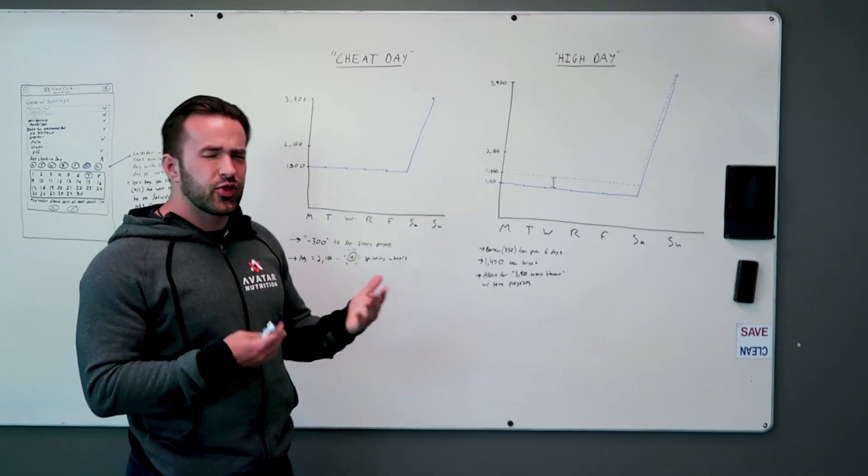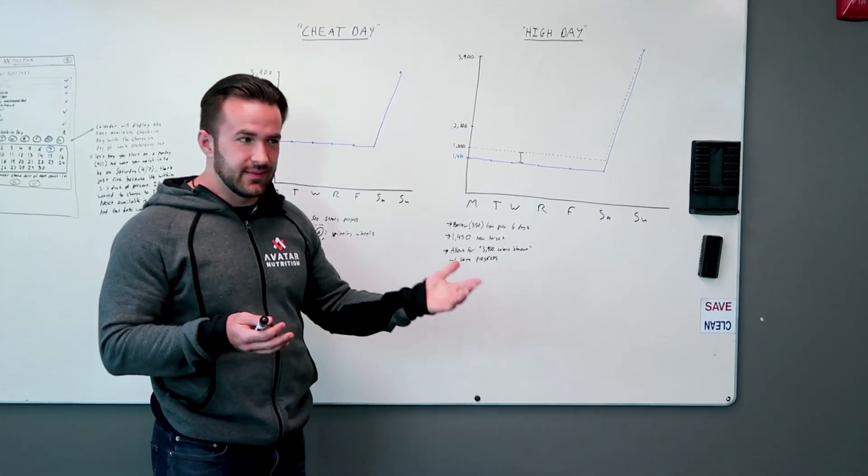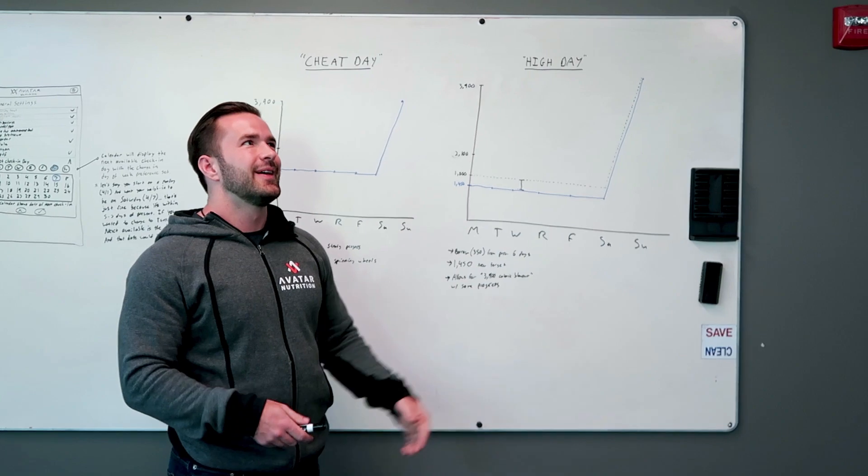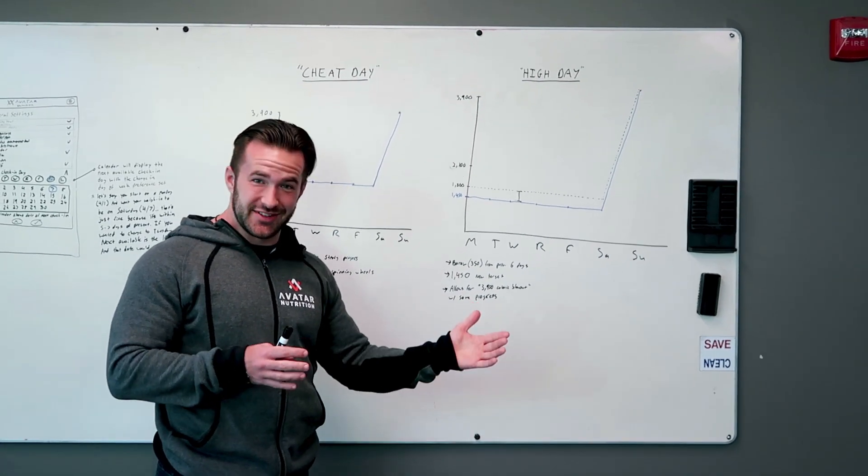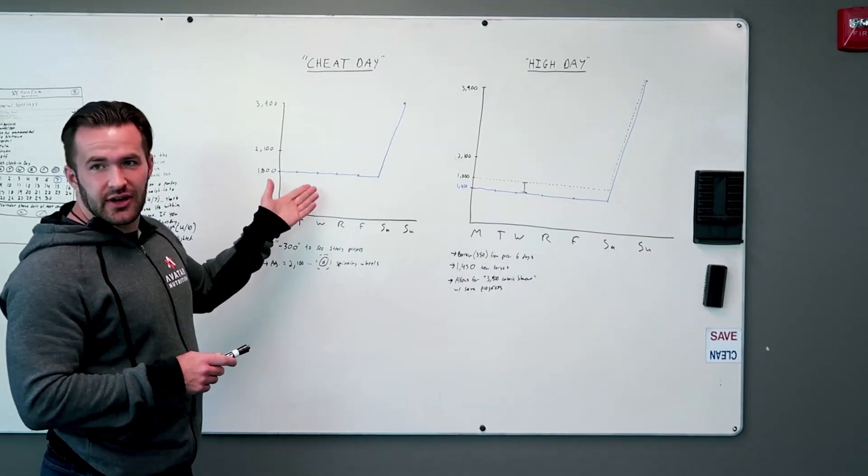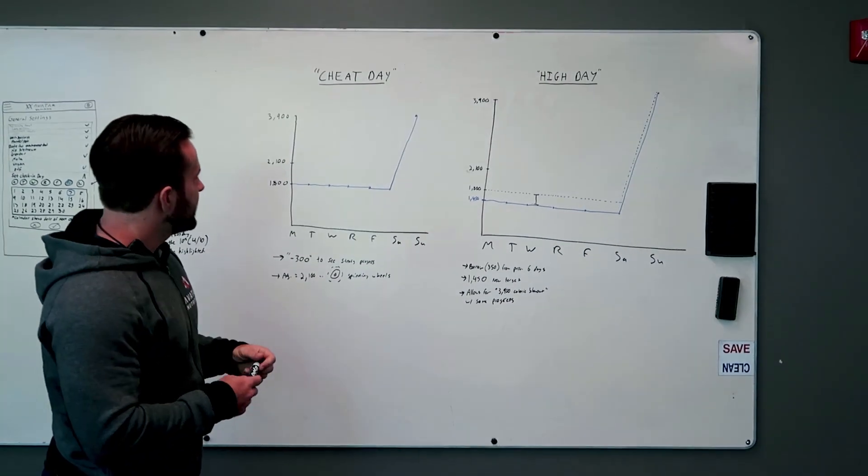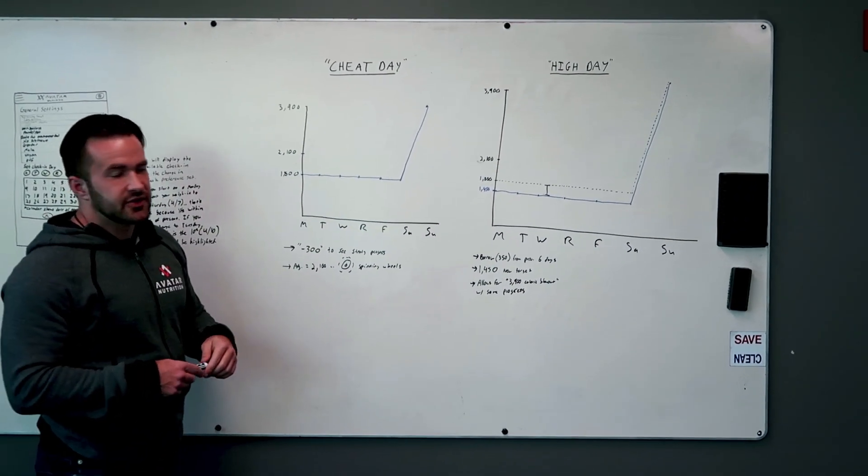So we'll just throw in about a 300 calorie a day deficit. So that's what they're going to need to lose weight throughout the week. So for this person, that would be 1,800 calories.